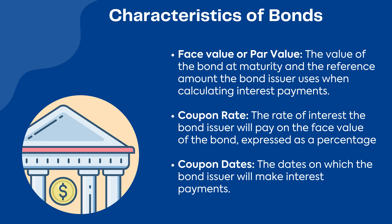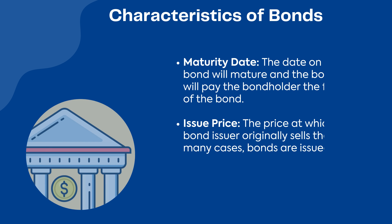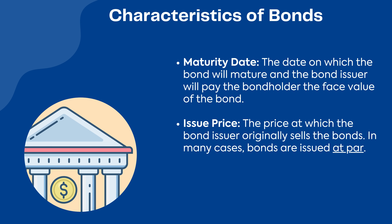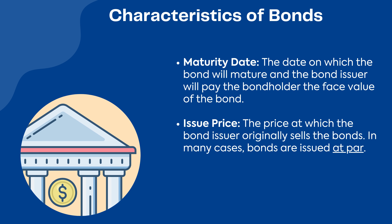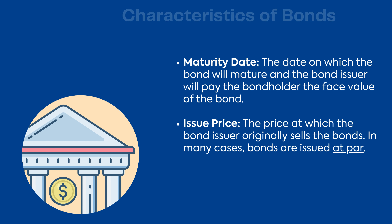Coupon dates: the dates on which the bond issuer will make interest payments. Maturity date: the date on which the bond will mature and the bond issuer will pay the bond holder the face value of the bond. Issue price: the price at which the bond issuer originally sells the bonds. In many cases, bonds are issued at par.